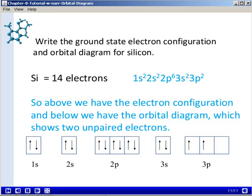So we have the electron configuration 1s2, 2s2, 2p6, 3s2, 3p2. And at the bottom here we have the orbital diagram, which shows the presence of two unpaired electrons, both in the 3p subshell.